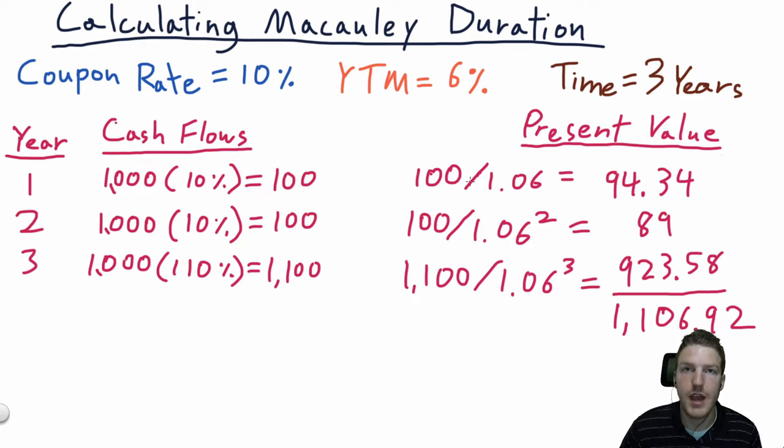Now we'll calculate the present value of each of these cash flows in each year. So for the first year, it's just 100 divided by 1 plus the market interest rate of 6%, which gives us 94.34. The present value of the cash flow in year 2 is $100 divided by 1.06 to the power of 2. So we're getting this two years out, so we have to discount it back to the present value by the compounding effects to the power of 2, so that gives us $89. And for the third cash flow, we're going to take the $1,100 and divide it by 1.06 to the power of 3 because we have to discount it back three years. So that gives us a cash flow of 923.58 for a sum total of 1,106.92.